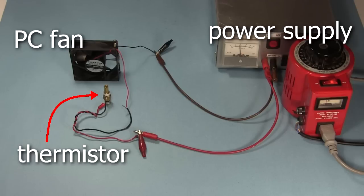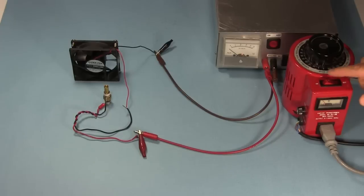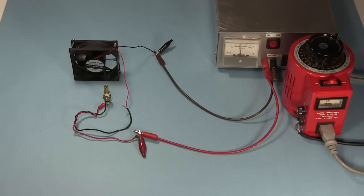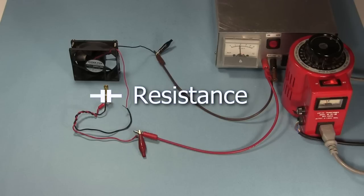Now here it is with the thermistor. The positive from the power supply goes to one end of the thermistor. The other end of the thermistor goes to the positive of the PC fan, and the negative of the PC fan goes back to the power supply. But this time when I turn on the power supply, the fan doesn't start spinning. That's because the thermistor is nice and cool at room temperature, and so it has a high resistance.